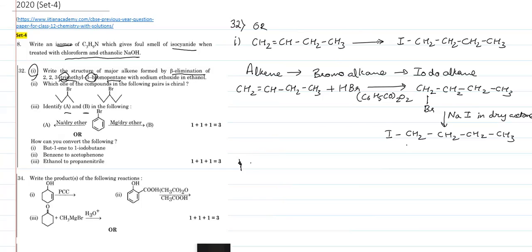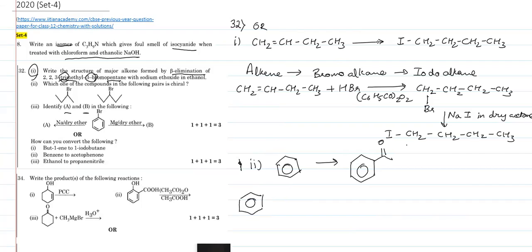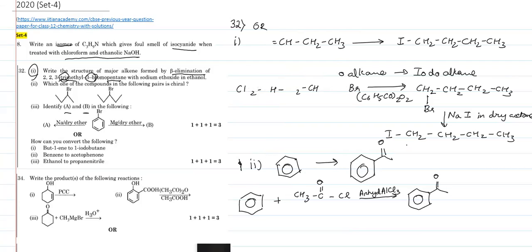Next conversion: benzene to acetophenone. Benzene reacts with CH3COCl in the presence of anhydrous AlCl3. This is the Friedel-Crafts acylation reaction — a direct preparation of a ketone from benzene or a substituted benzene — to give us acetophenone. Pretty straightforward.